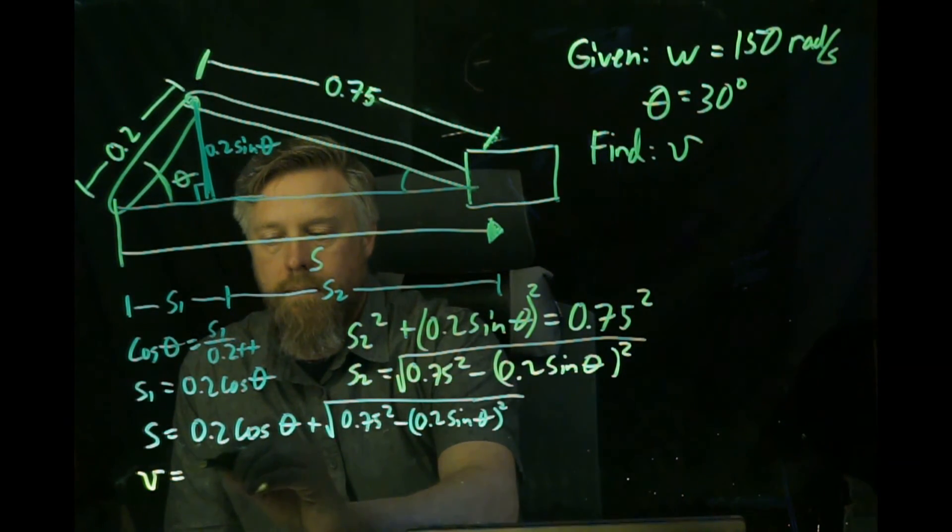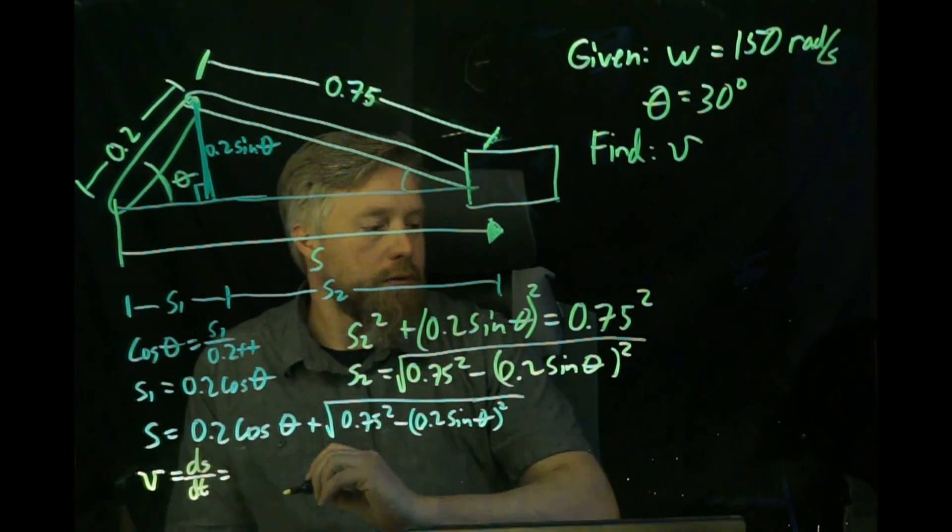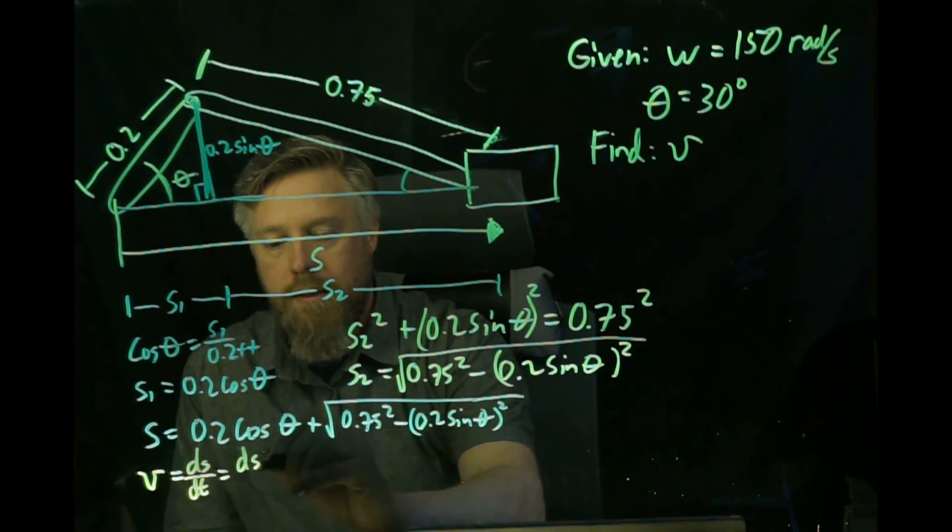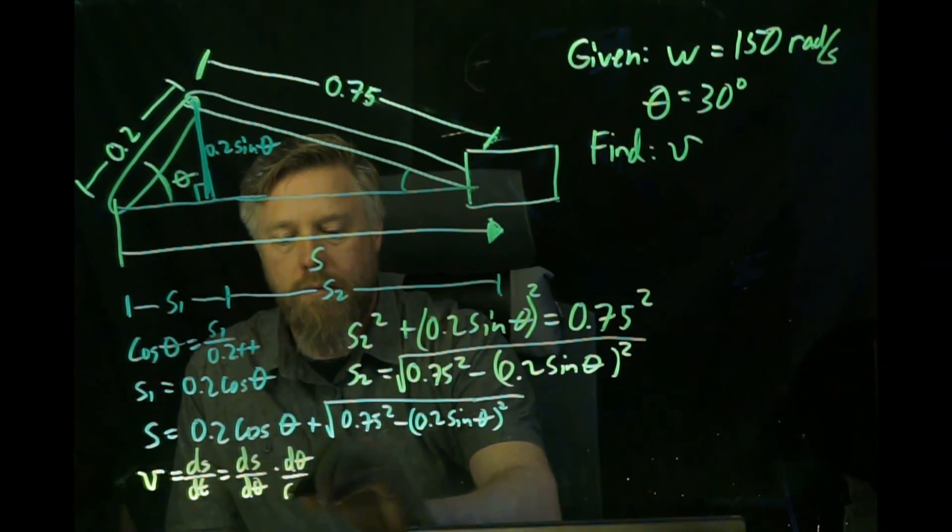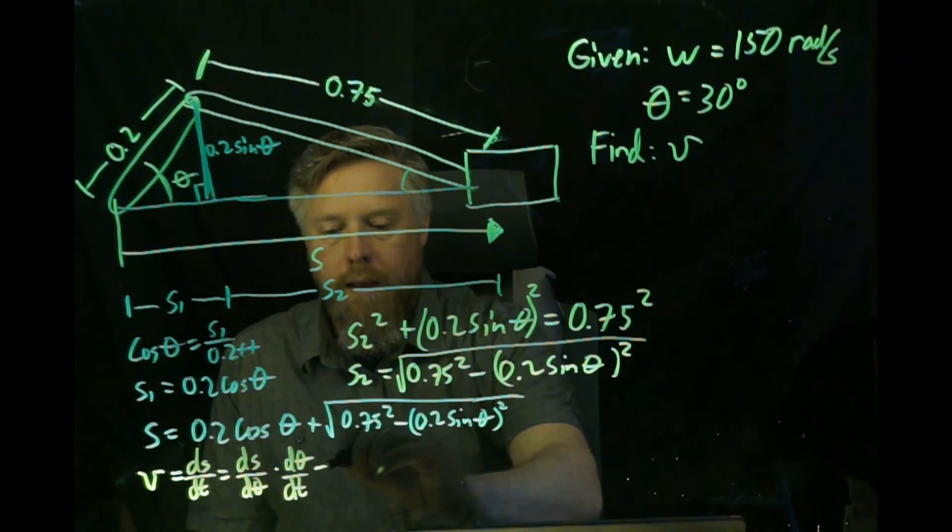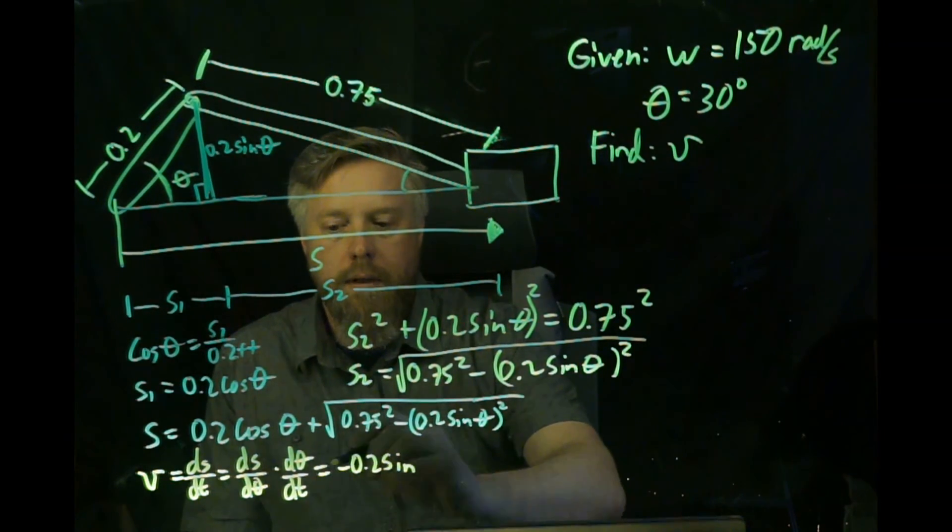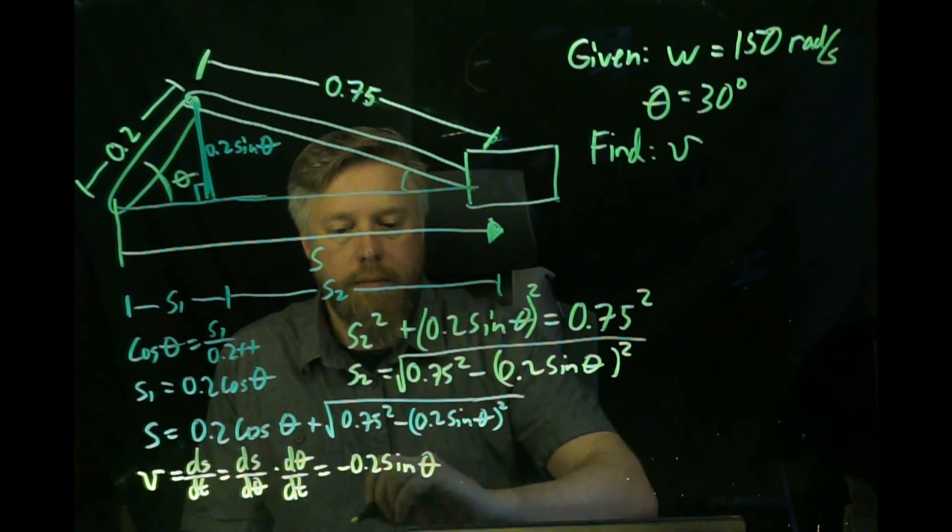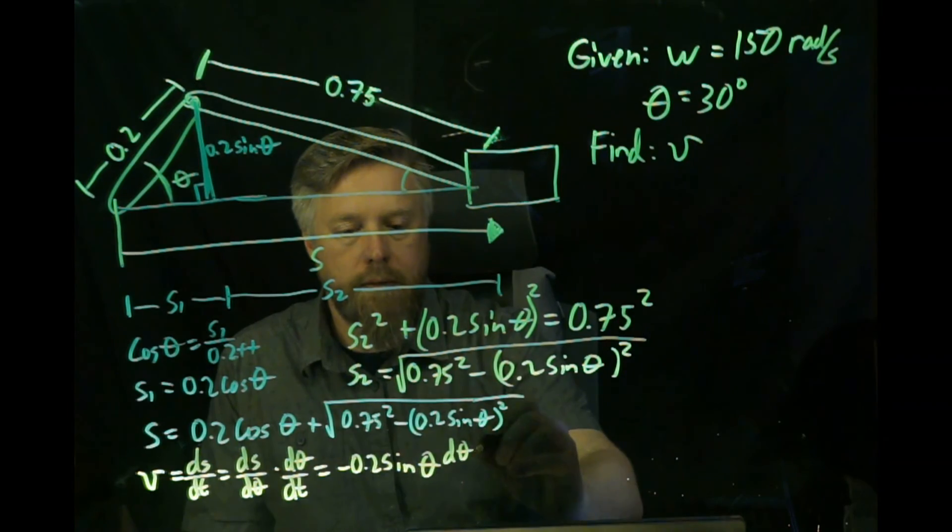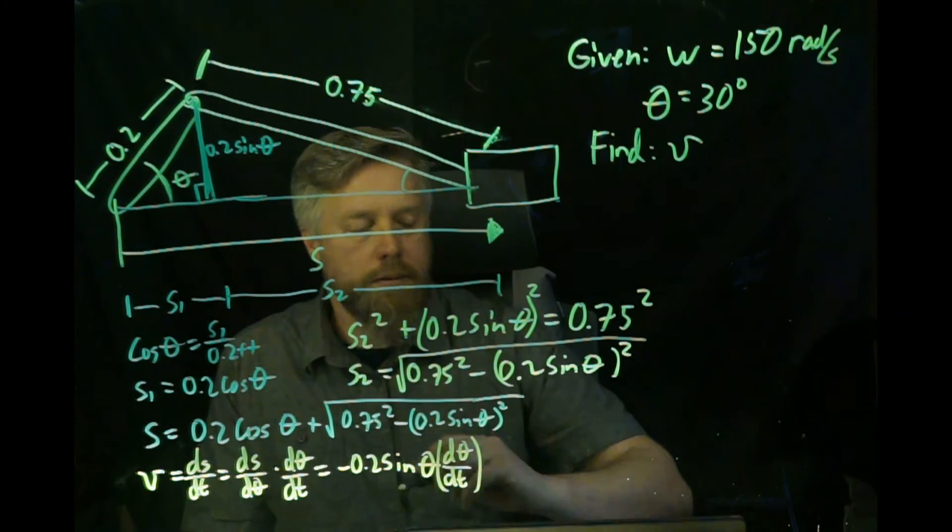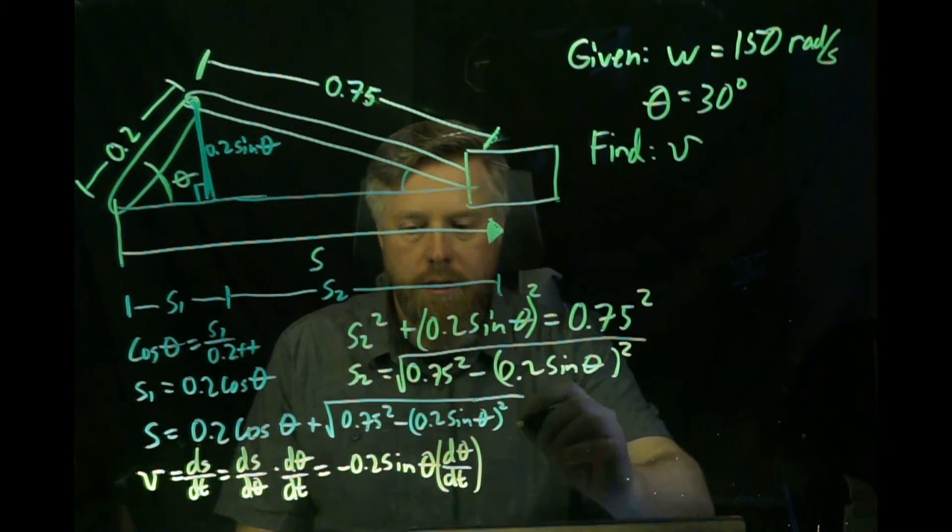We'll take the first term. We know it's equal to ds/dt, and we want to remind ourselves of the chain rule. We're going to write that it's the same thing as ds/d theta times d theta/dt to remind us of that d theta/dt, because it's easy to forget. The first term is just negative 0.2 sine theta, and of course then we have d theta/dt, the chain rule.